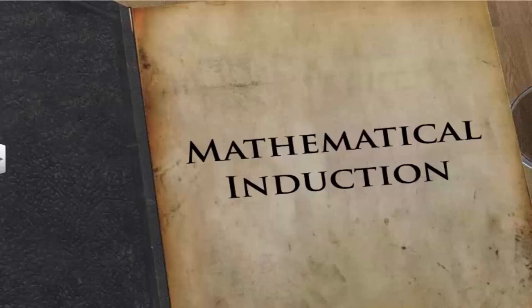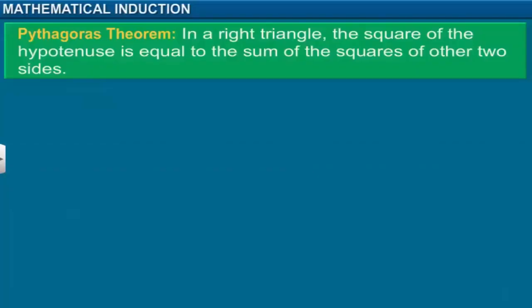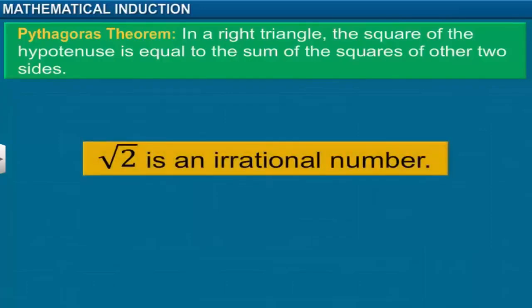In this module, you will learn about the principle of mathematical induction. You have seen the proofs for theorems, statements, and corollaries in your previous classes. We proved the Pythagoras theorem by using definitions and facts. The square root of 2 is an irrational number, and this can be proved by contradiction. However, this method cannot always be used to prove all mathematical statements.